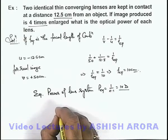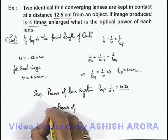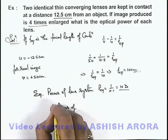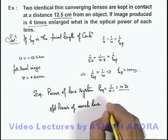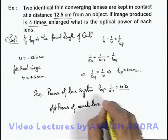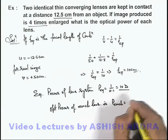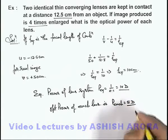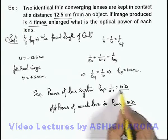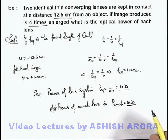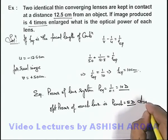We can directly write the optical power of each lens. Since both lenses are identical, the power of each lens will be equal to 5 diopters, as the sum of the 2 individual lenses gives us the total equivalent power of the lens system. So that will be the answer to this problem.